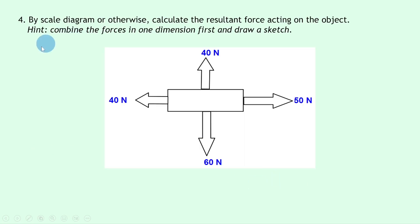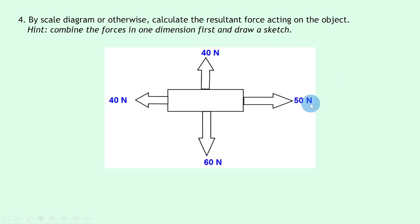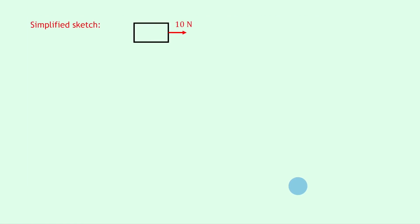Question four says: by scale diagram or otherwise, calculate the resultant force acting on the object. We've got four forces: 40 newtons to the left, 50 newtons to the right, 40 newtons upwards, and 60 newtons downwards. The hint says to combine forces in one dimension first. Combining the horizontal forces gives 10 newtons to the right, and combining the vertical forces gives 20 newtons downwards.